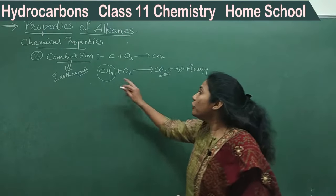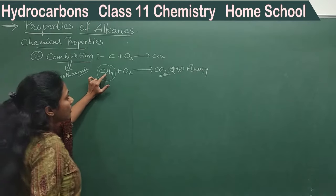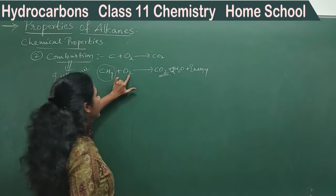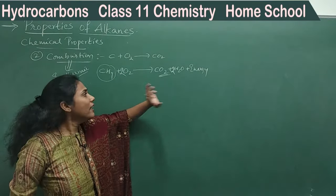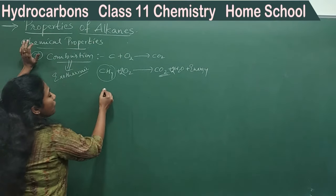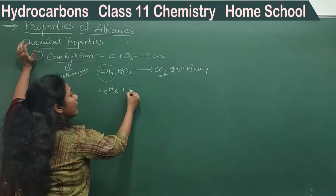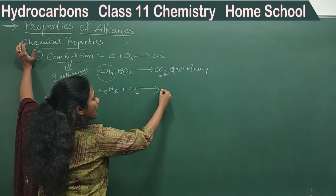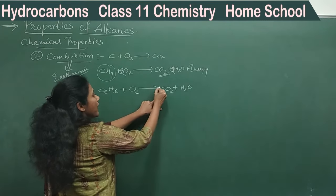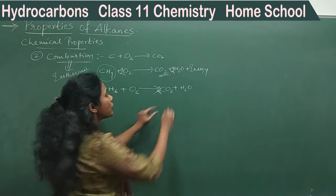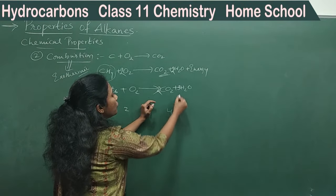Balancing is very important in combustion equations. For methane: CH4 + 2O2 → CO2 + 2H2O. One carbon balances, four hydrogens give two water molecules, and four oxygens balance on both sides. For ethane (C2H6) combustion: you have two carbons, so put 2 before CO2. Six hydrogens give three H2O. Coming to oxygen: two from CO2 gives four, plus three from H2O gives six — wait, that gives 4+3 = seven oxygens needed on the left side.